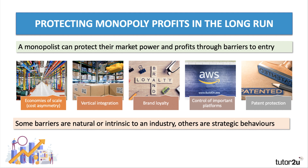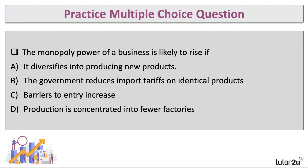Have a go at this practice multiple choice question — press the pause button when you're ready. The question is: the monopoly power of a business is likely to rise if... The answer is C: when barriers to entry increase, because it makes it harder and more difficult for new firms to enter the market.